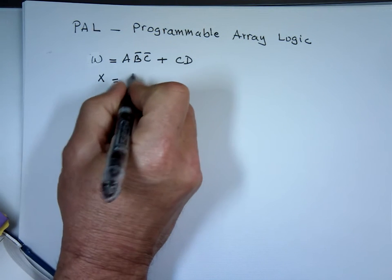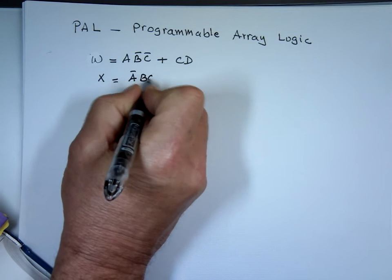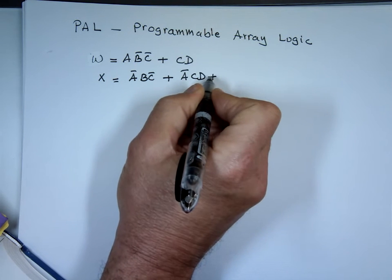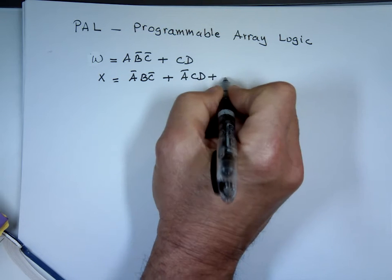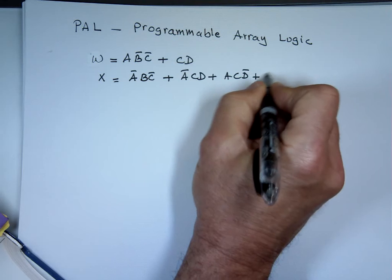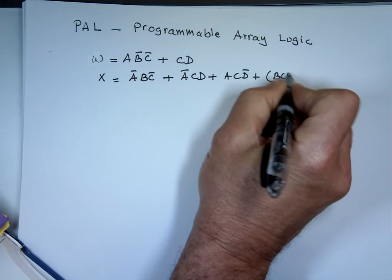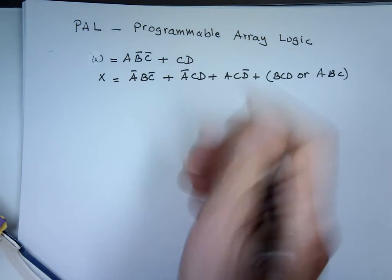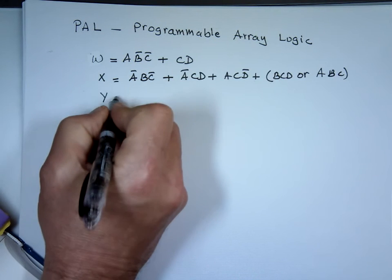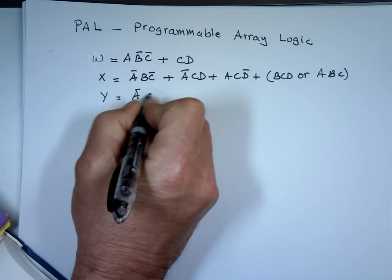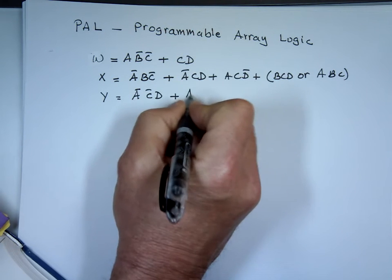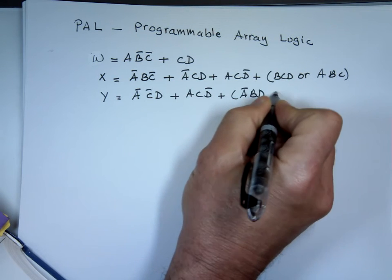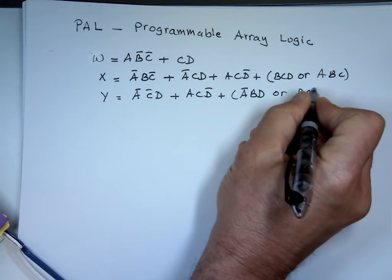X also has A-bar plus B, C, D — because sometimes you have more than one choice when grouping through the K-map; you have two options. Y is going to be A-bar, C-bar, D plus A, C, D-bar, or B, C, D. So I want to use a PAL for that.